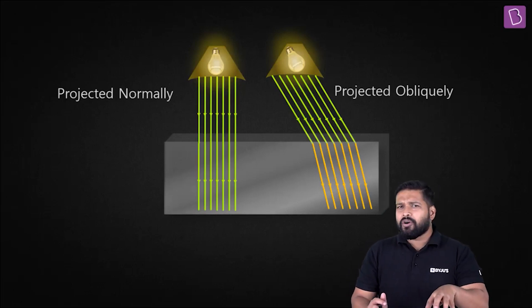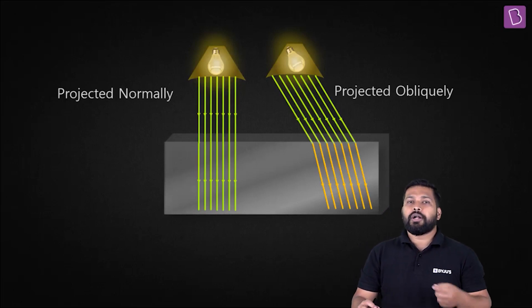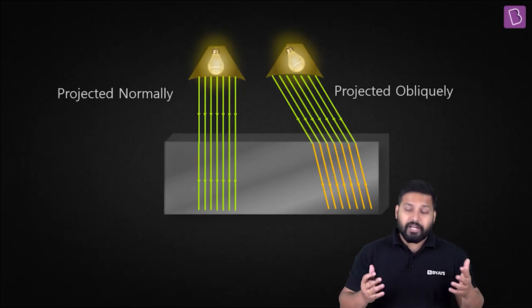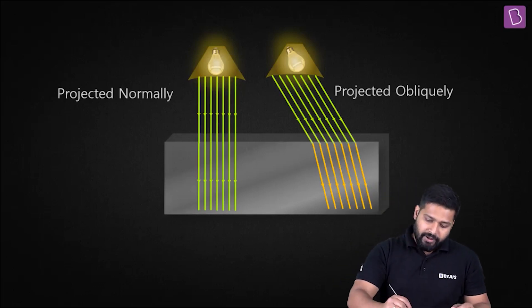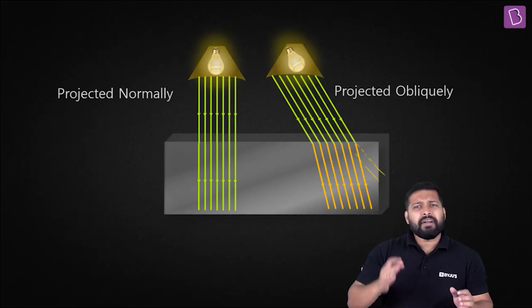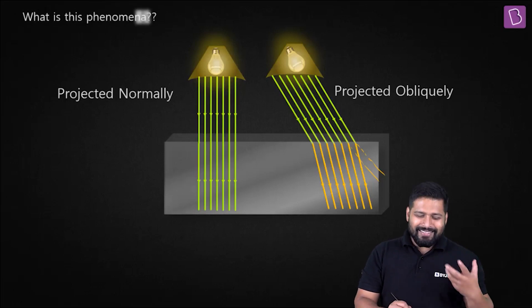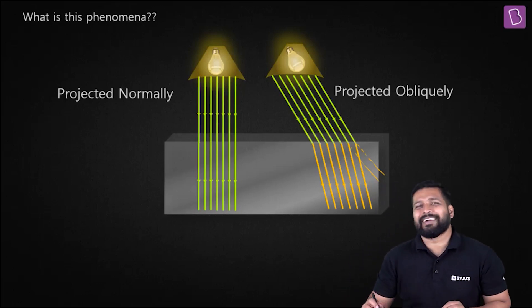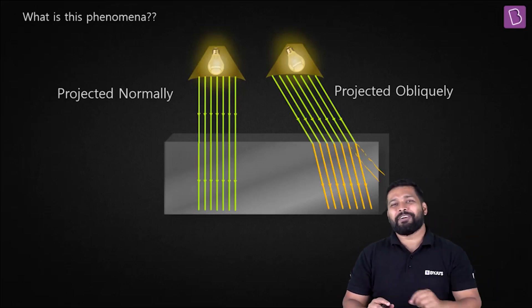The same situation as that of the earth and the sun. When light passes through a different medium — a transparent medium — it bends. Of course it continues moving in a straight line path, but it bends, as you can see. It should have gone straight, but it bends. Now what is this phenomenon called? Well, this phenomenon is our next topic — it is called refraction.